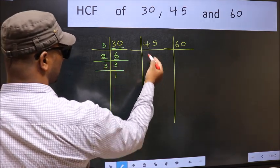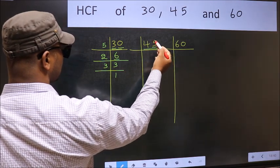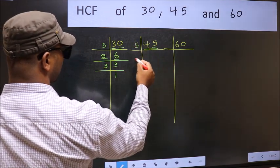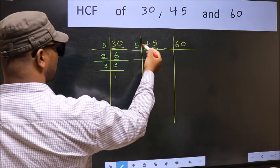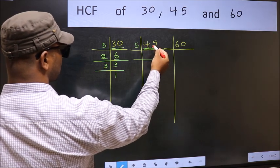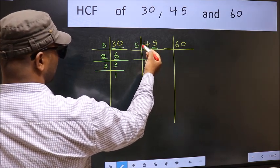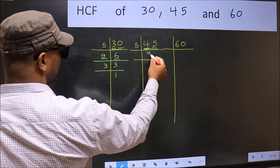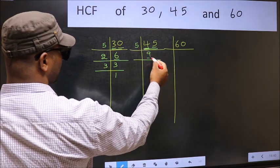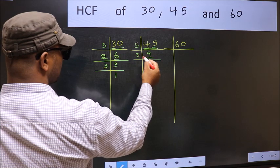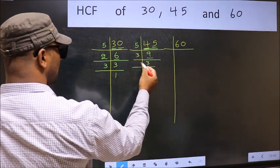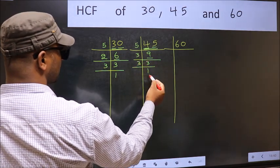Now the other number, 45. Last digit 5, so take 5. First number 4 smaller than 5, so 2 numbers 45. When do we get 45 in 5 table? 5, 9 is 45. Now 9 is 3, 3 is 9. Now we have 3, 3 is a prime number, so 3, 1 is 3.